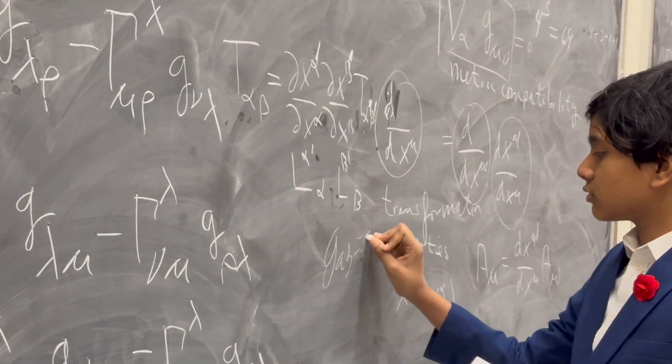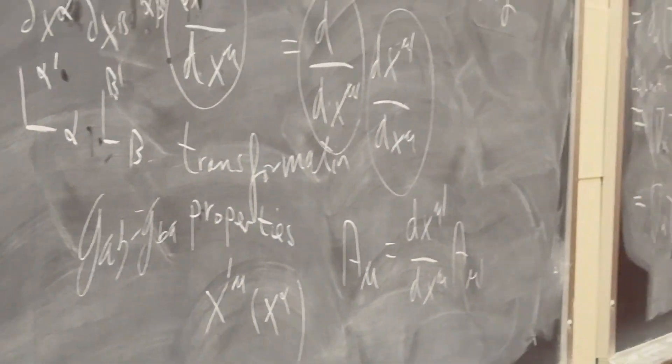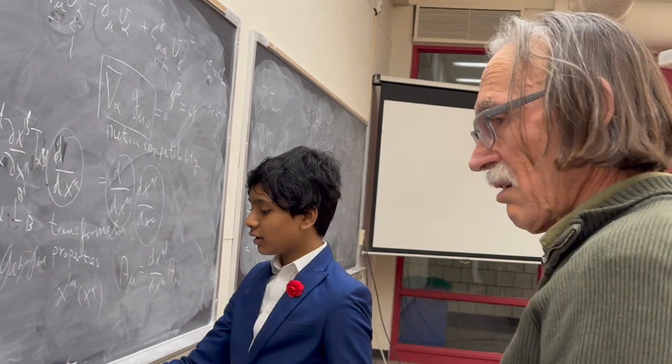G_αβ equals G_βα or something like that? Oh yeah, the metric tensor is symmetric. Okay.